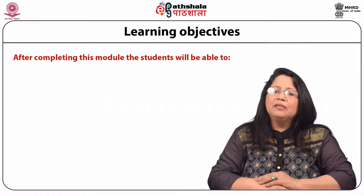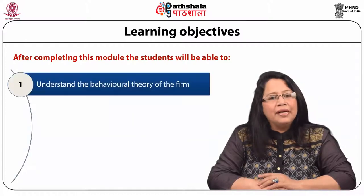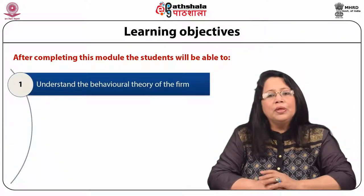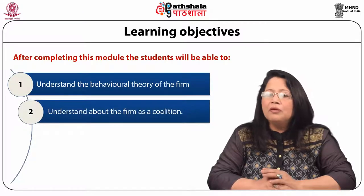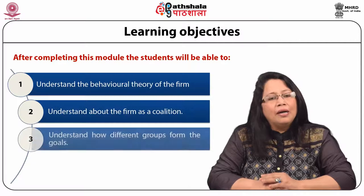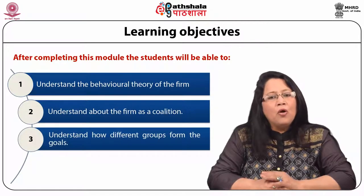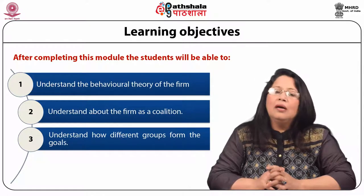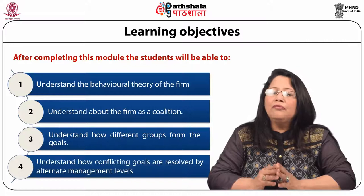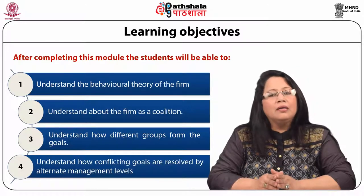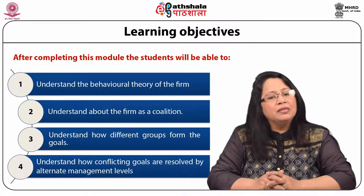After completing this module, the students will be able to understand the behavioral theory of the firm, understand about the firm as a coalition, understand how different groups form the goals, and also understand how conflicting goals are resolved by alternate management levels.